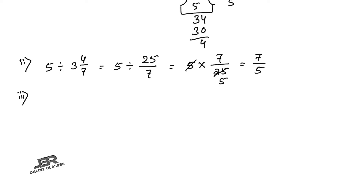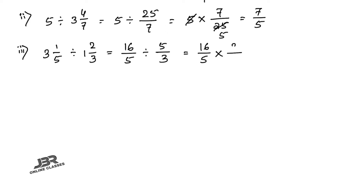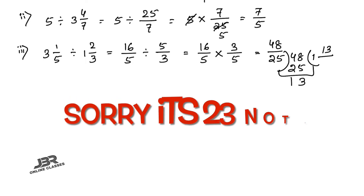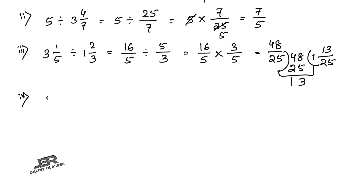Part 3: 3 whole 1/5 divided by 1 whole 2/3. Convert: 3 whole 1/5 = 16 by 5. Convert 1 whole 2/3: 3 + 2 = 5, so 5 by 3. Then 16/5 × 3/5 = 48 by 25. Convert to mixed fraction: 25 ones are 25, so the answer is 1 whole 23 by 25.